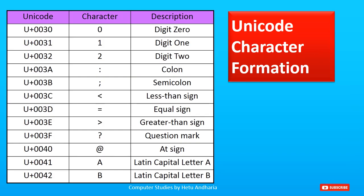You can pause the video and check the tabular information given here. For example, '0' is a character and it is converted to the Unicode code U+0030, with the description 'Digit Zero'. There is no need to go into much detail here.